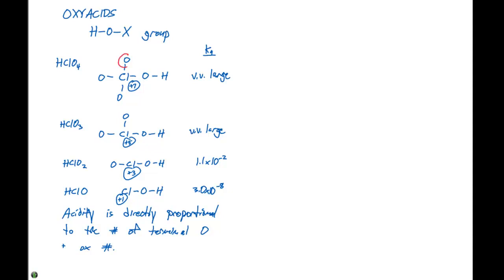So HClO4 has three terminal oxygens. HClO3 is only going to have two of them. HClO2 only has one. And HClO doesn't have any. So the terminal oxygens are indicated here with the red circles, and they're going to dictate how particularly strong or weak an acid is.